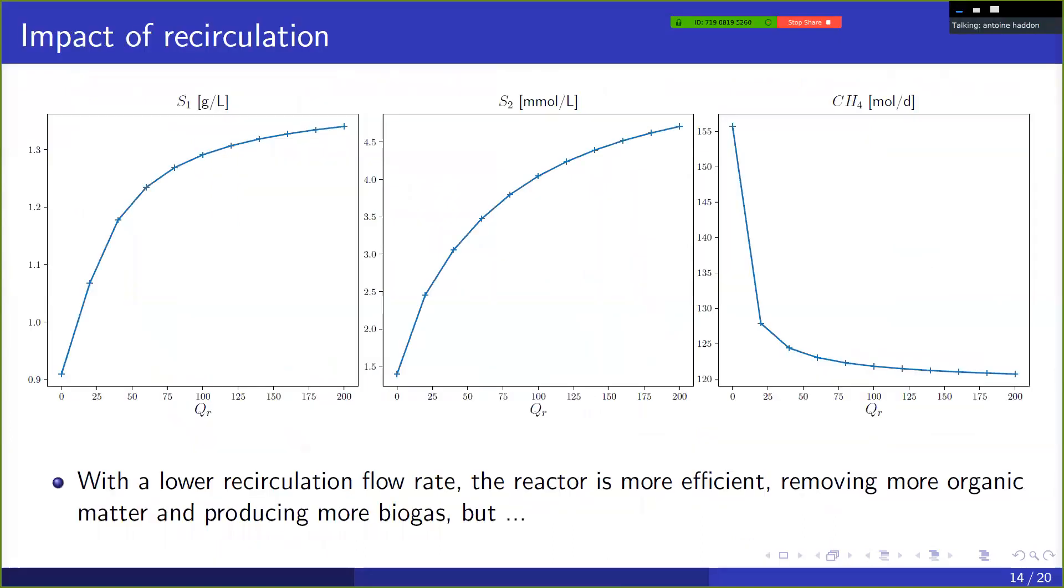And then what we can do is we can look at the impact of the mixing and the impact of heterogeneity on the biological activity. So here, what was presented is the values at equilibrium of the first and second substrates and also the biogas flow rate at equilibrium and as a function of the recirculation. So the standard conditions normally for the experimental validation, for instance, are 150 liters per hour. And here we can see clearly that actually with a lower recirculation rate, the reactor is more efficient, we have less substrates coming out and we have higher biogas production.